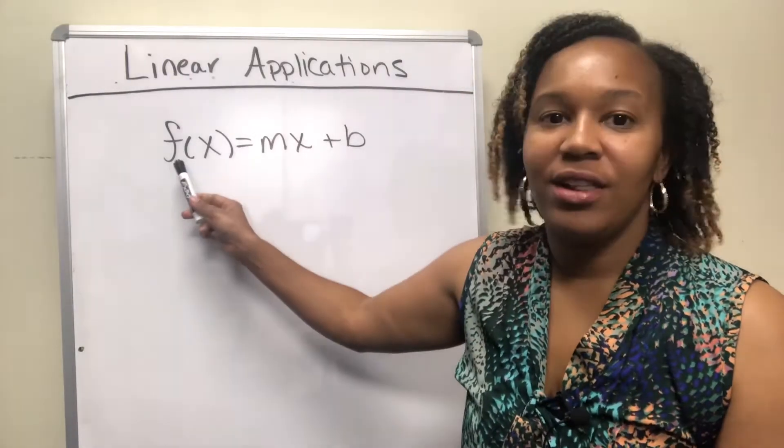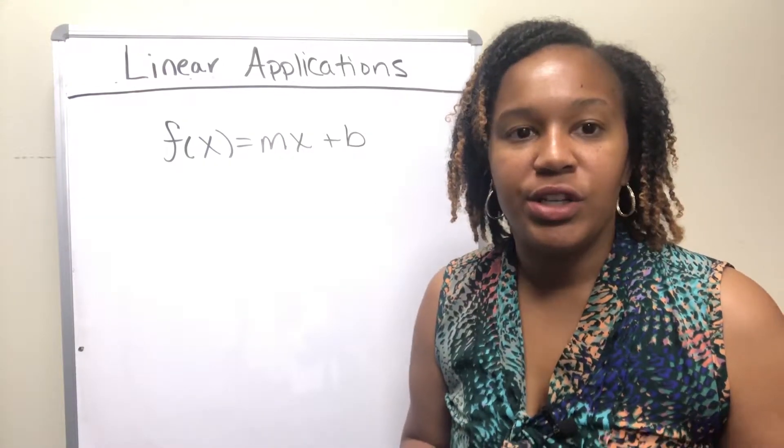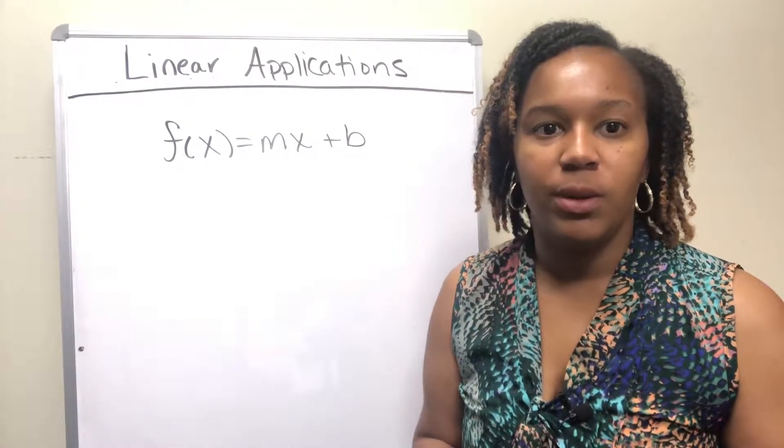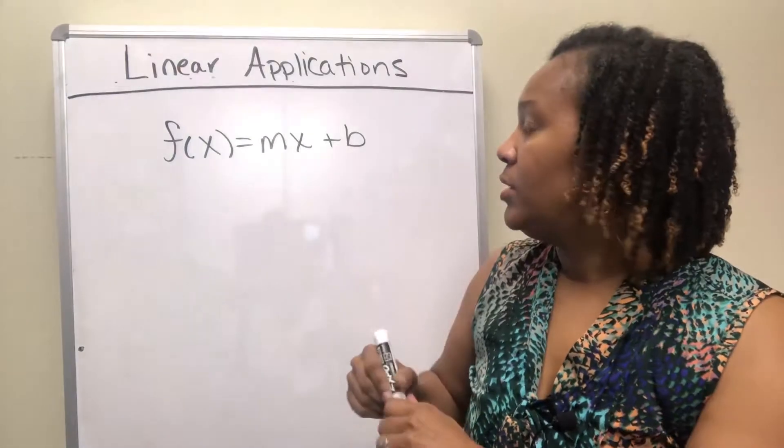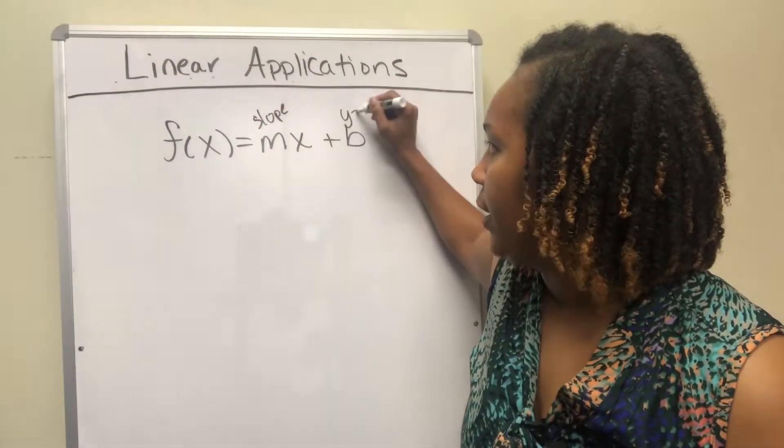So recall that a linear function is a function of the form y equals mx plus b, or f of x equals mx plus b, where y and f of x are interchangeable. m represents the slope, and b represents the y-intercept.